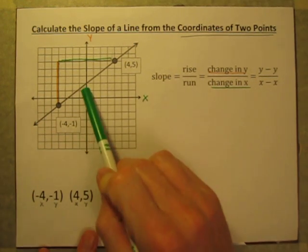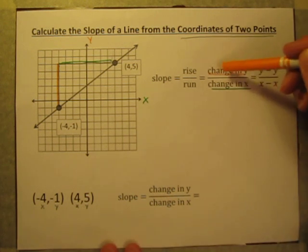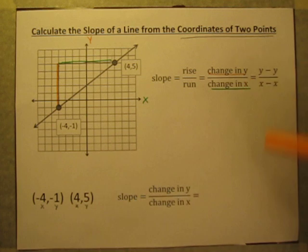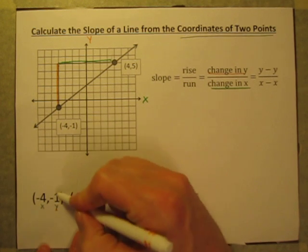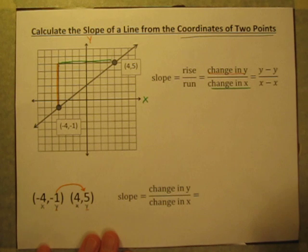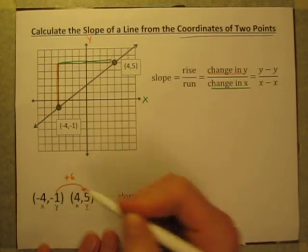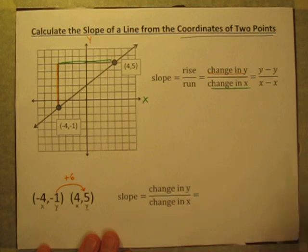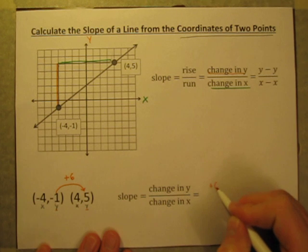So how can we do this without the graph? Well, if we remember that slope is equal to change in y over change in x, let's look at how the y-values are changing. We are going from negative 1 to 5 — that got bigger, it went from negative 1 up to 5, so it is increasing by 6. Because negative 1 plus 6 is 5. So I know my change in y is positive 6.